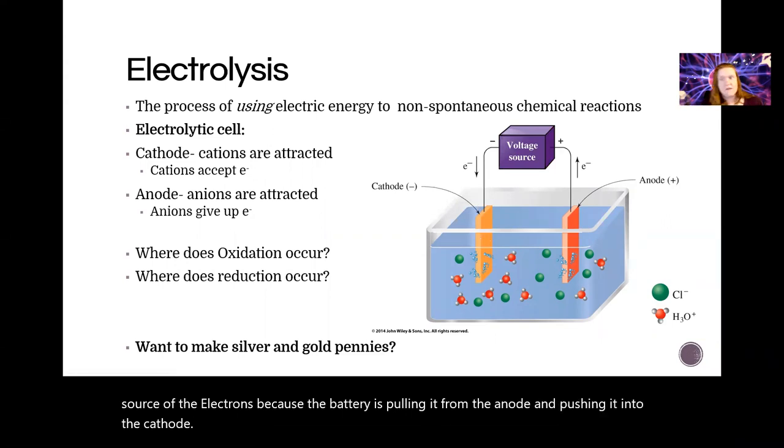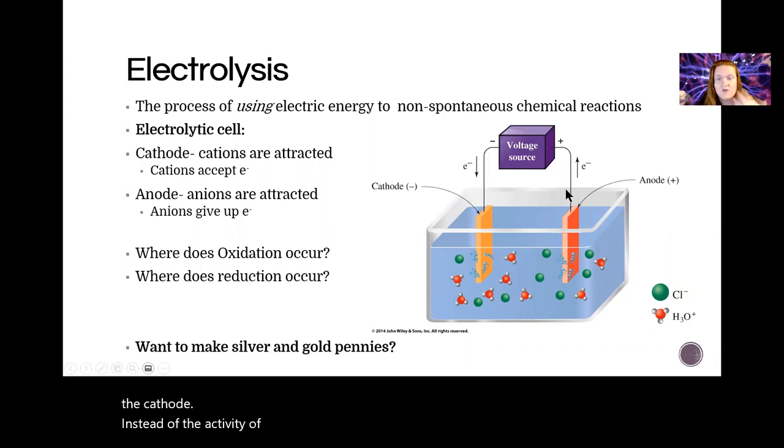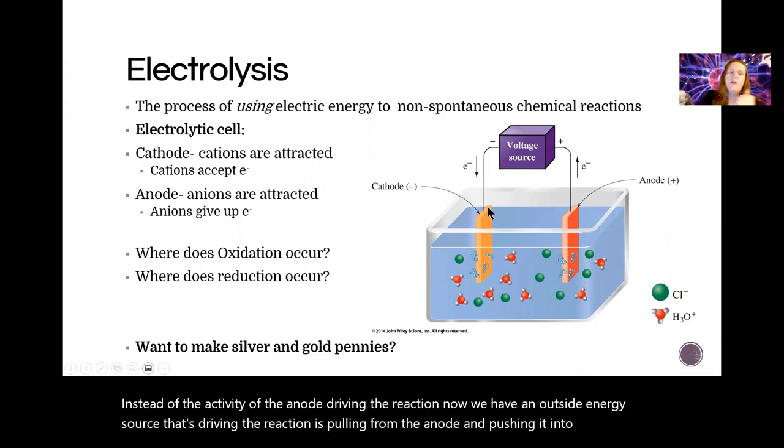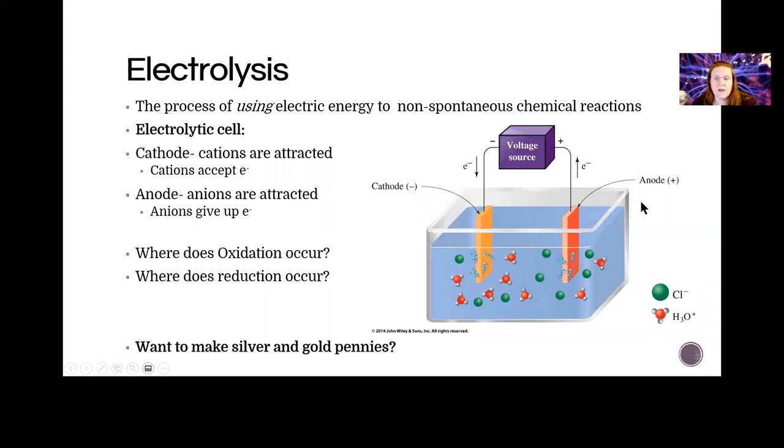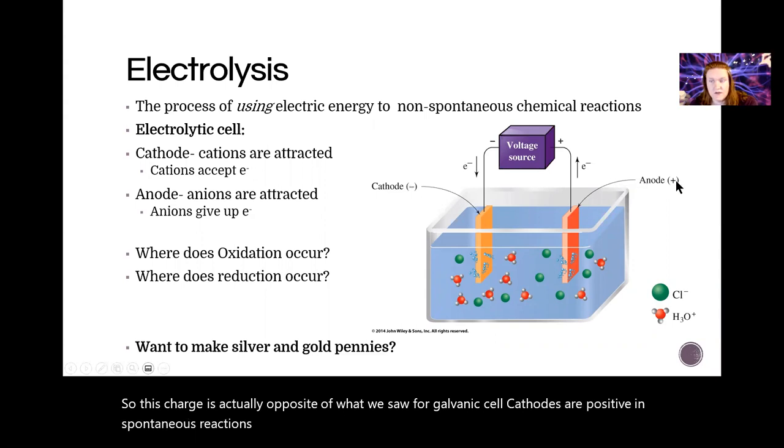So instead of the activity of the anode driving the reaction, now we have an outside energy source that's driving the reaction. It's pulling from the anode and pushing it into the cathode. So this charge is actually opposite of what we saw for a galvanic cell. Cathodes are positive in spontaneous reactions and anodes are negative in spontaneous reactions.